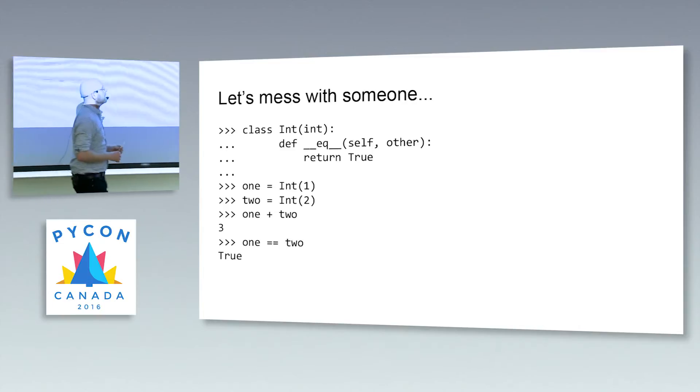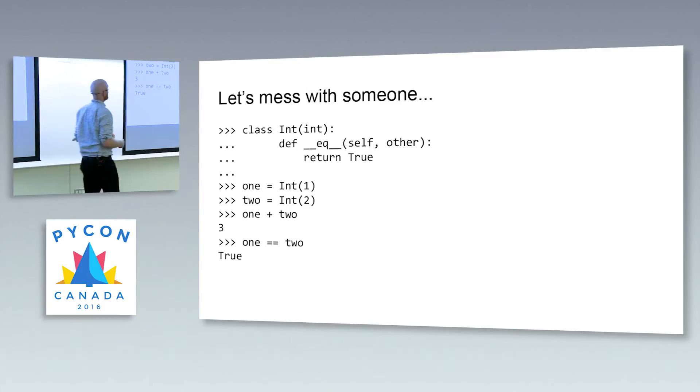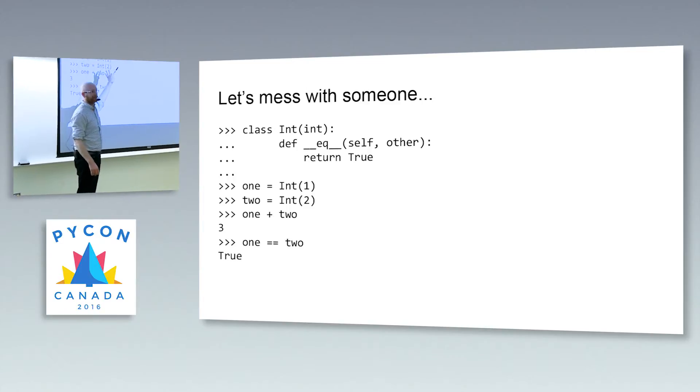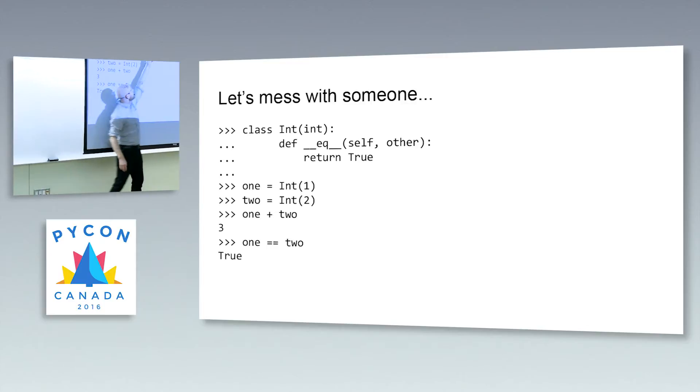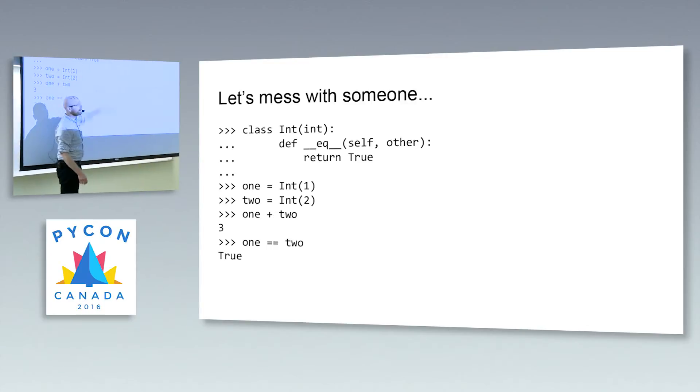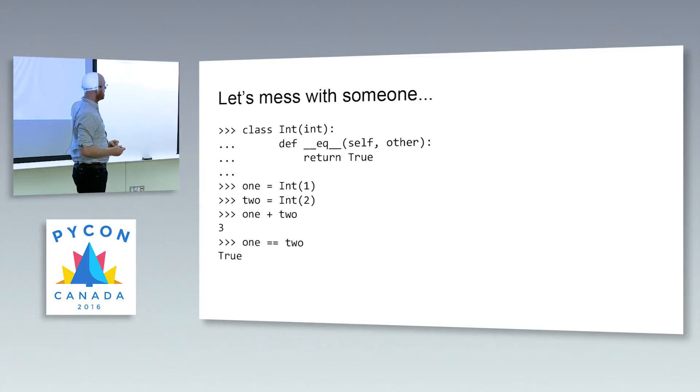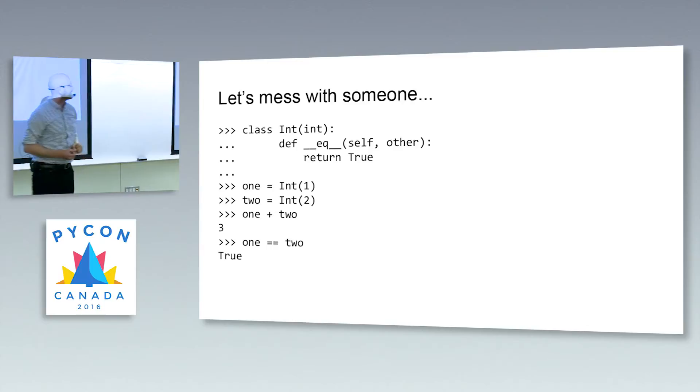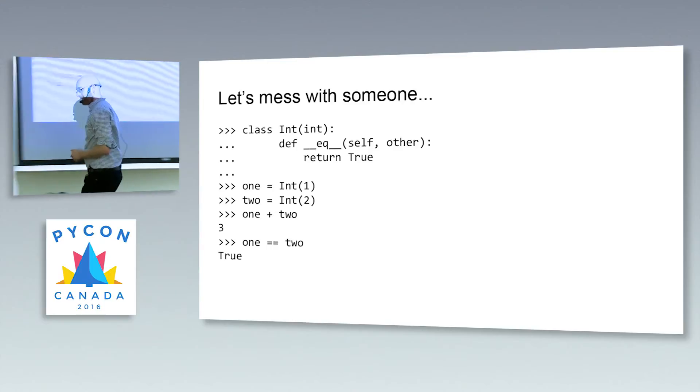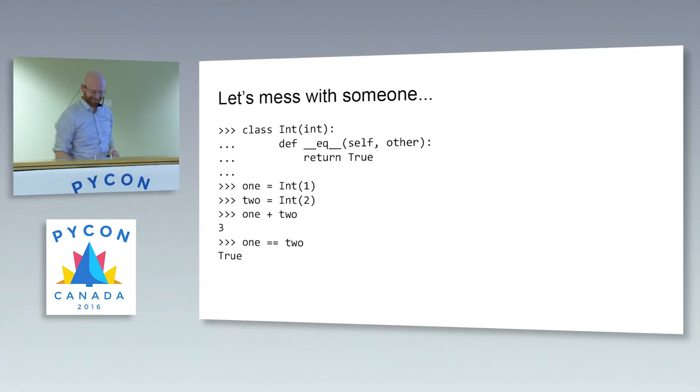So let's have a little bit of fun. Let's create an integer class. And just no matter what, it's equal to whatever else you try and compare it against. So we'll create one and an int two, and when you add them together, it's three. But when you check if one is equal to two, one comes in here, two comes in here, and no matter what, it's going to be true. So push this to production and lose your job. It's one way to go out, right?